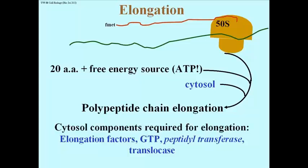The cytosol components required for elongation included a number of elongation factors. It included more GTP, and it included an enzyme called peptidyl transferase, as well as an enzyme called translocase.